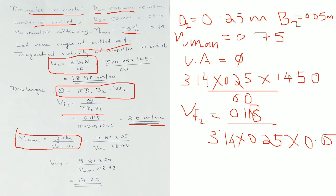Calculating further, U2 is approximately 18.98 m/s and VW2 is 16.23 m/s.